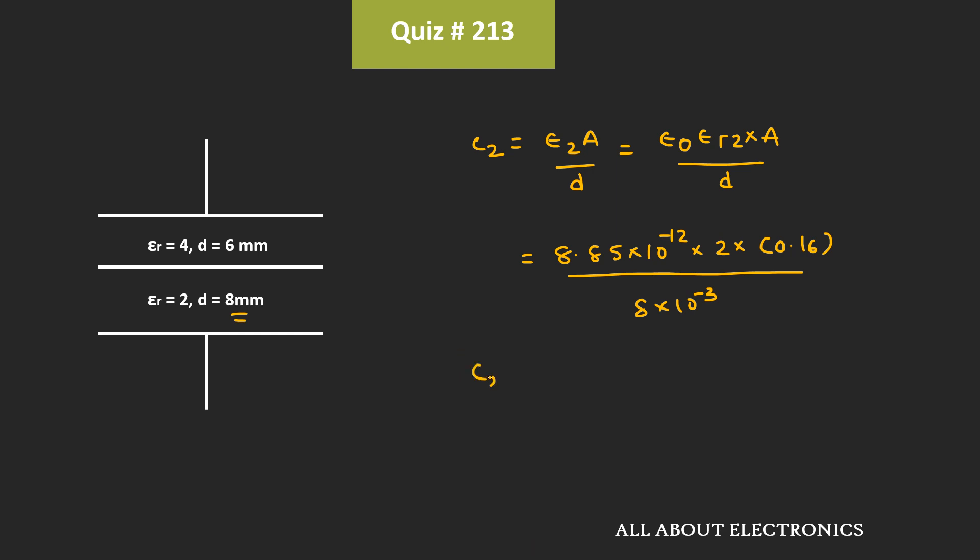That means the value of the second capacitor C2 is equal to 354 pF. So in this way, the value of C1 is equal to 944 pF while the value of C2 is equal to 354 pF.